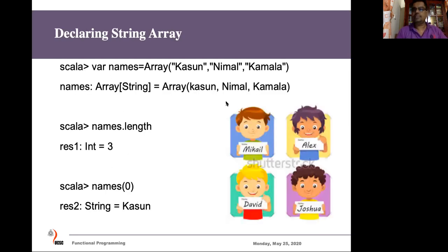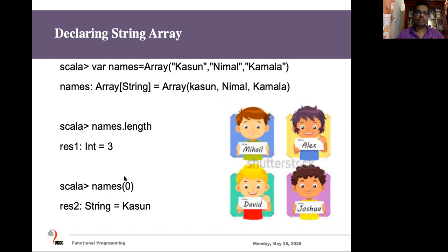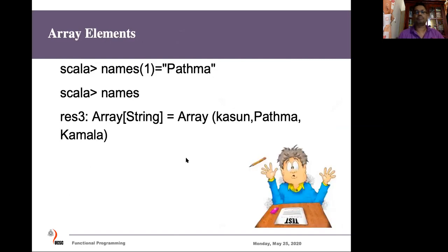Not only integers — arrays can be used to store any other data types. For example, strings. Here is a string array with three names. When you call 'length' it returns 3; 'names(0)' is the first element, 'names(1)' is the second, 'names(2)' is the third. Similarly, we can reassign values to the array because arrays are mutable. We can give the index and assign a new name, and the value at that index will change accordingly.